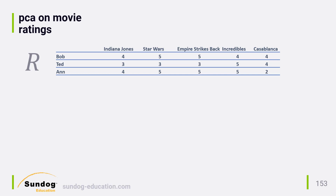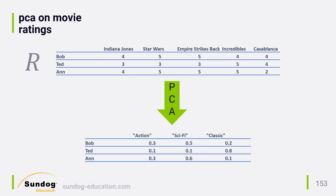We could ask PCA to distill things down to, say, three dimensions, and it would boil our ratings down to three latent features it identified. PCA won't know what to call them, but let's say they end up being measures of each person's interest in action, sci-fi, and classic genres. So for example, we might think of Bob as being defined as 30% action, 50% sci-fi, and 20% classic in terms of his interests.